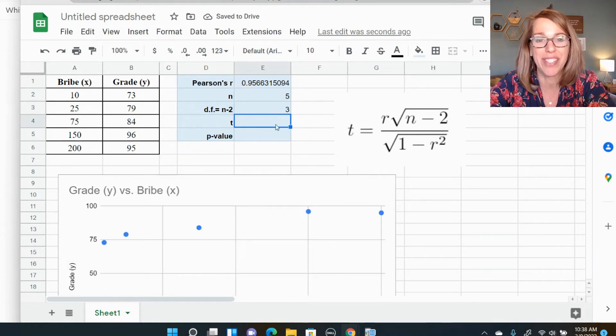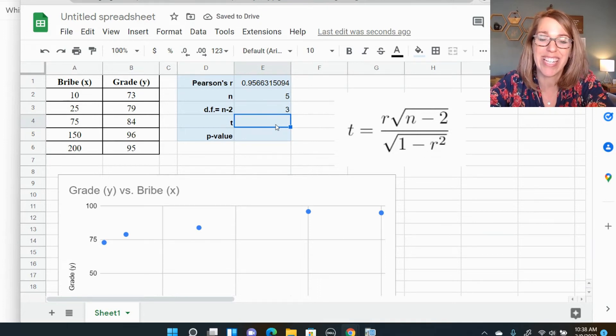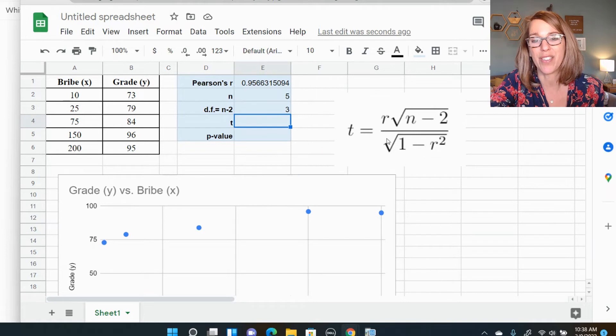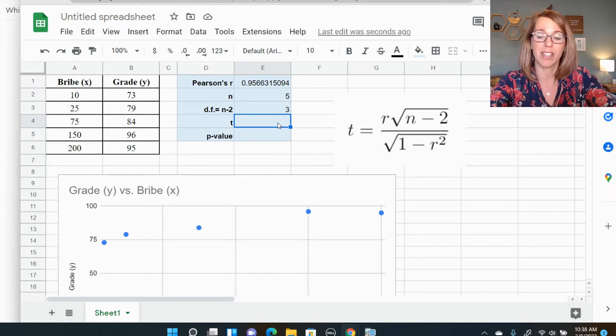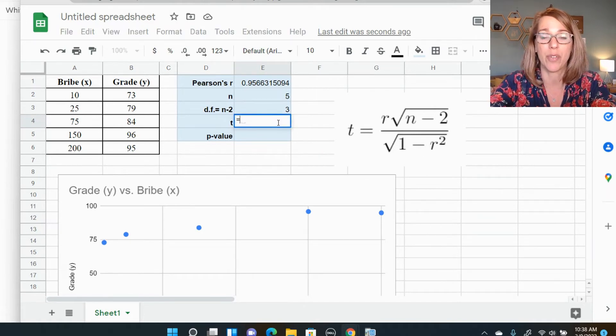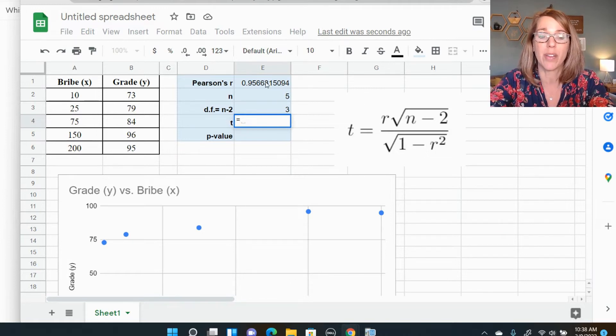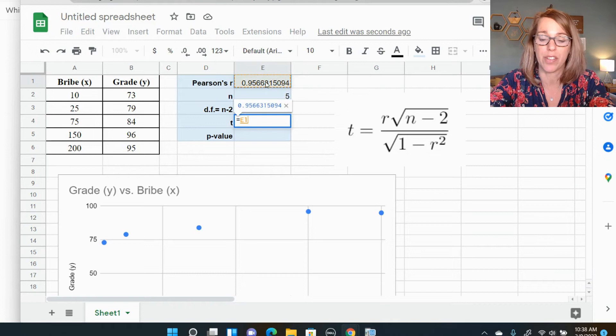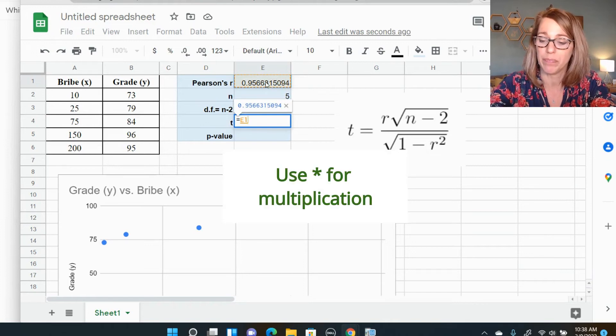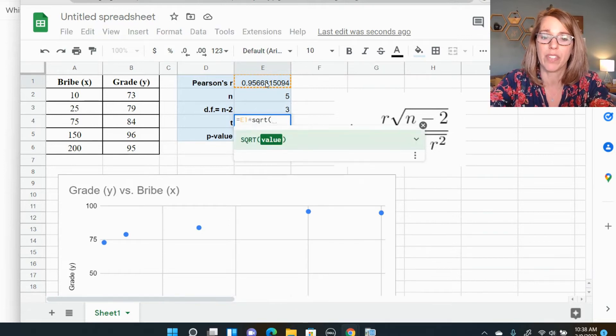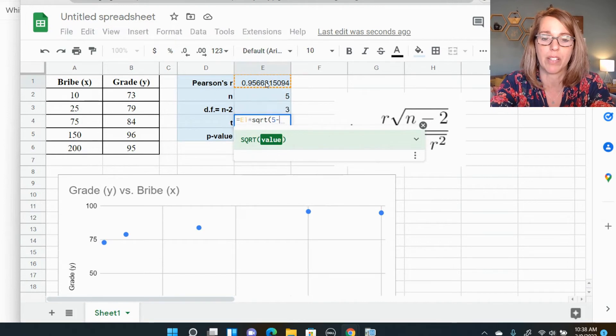Finally, not finally, almost finally, we're going to look at that T statistic. I've got the formula over here on the right. So I'm going to go ahead and type this in as a formula in Excel or Google Sheets. So I do equals, R is next. So I'm going to click on my R value and then times. I want the square root SQRT parentheses of N minus two. This is just three, but you can type in N minus two.